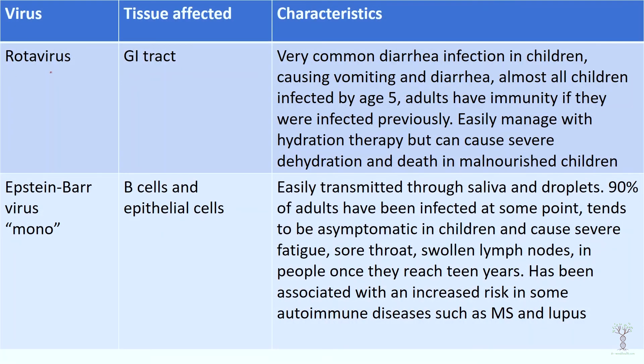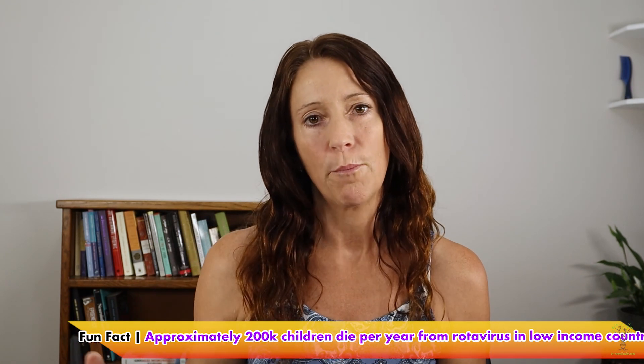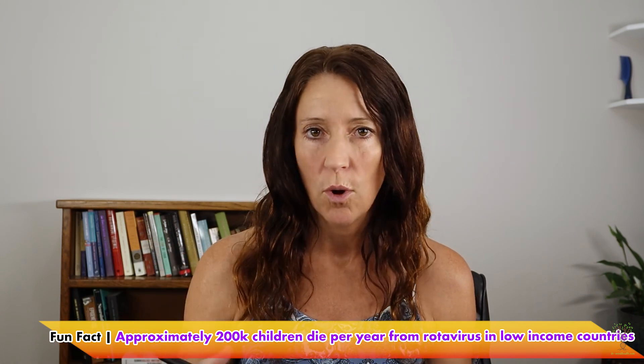Rotavirus is an extremely common diarrhea infection in children — it infects the GI tract and usually causes vomiting and diarrhea for a couple of days. Almost every child is infected with this at some point in their first five years of life, and usually adults are immune. It's not a kind of virus that mutates rapidly. It's generally harmless, but in children who are malnourished or have poor sanitation and don't have clean water or good healthcare, it can be fatal.